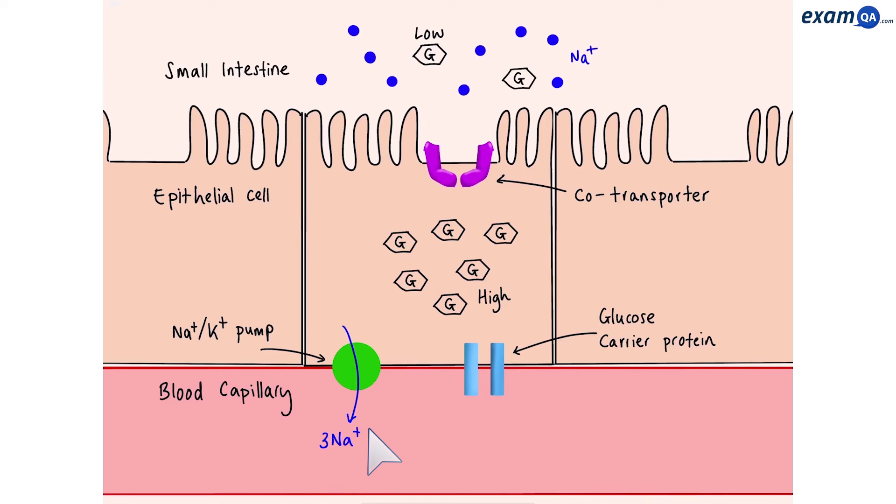The sodium potassium pump pumps out three sodium ions and pumps in two potassium ions. It uses ATP to do this. The reason it does this is so that the concentration of sodium inside the epithelial cell drops. Now we can say that the concentration of sodium in the small intestine is higher than that of the epithelial cell.